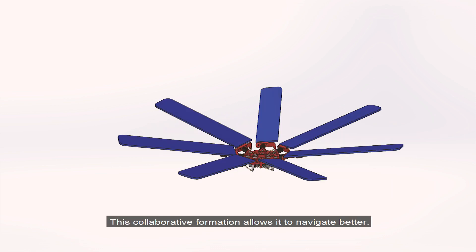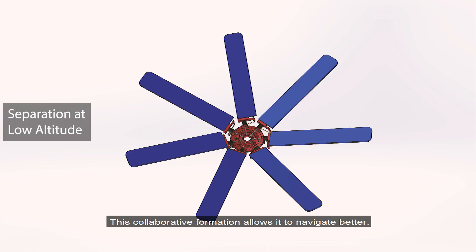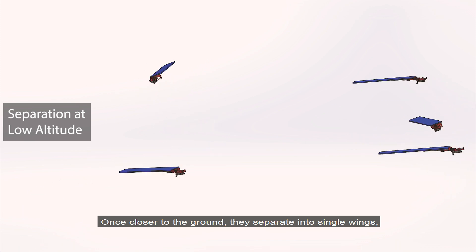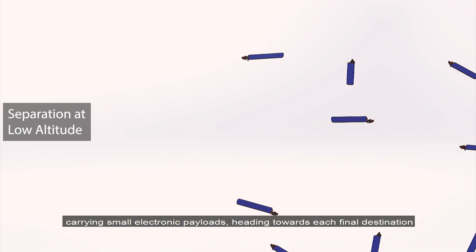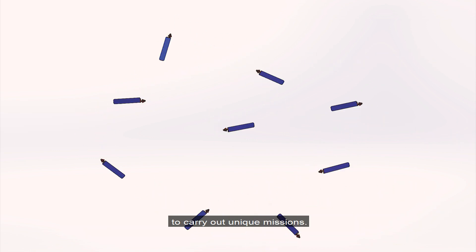This collaborative formation allows it to navigate better. Once closer to the ground, they separate into single wings carrying small electronic payloads, heading towards each final destination to carry out unique missions.